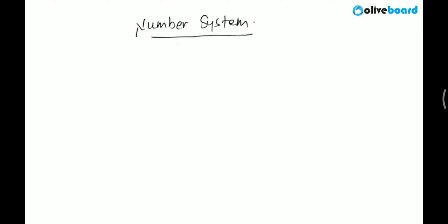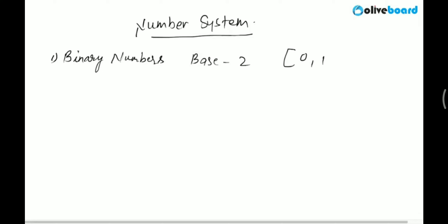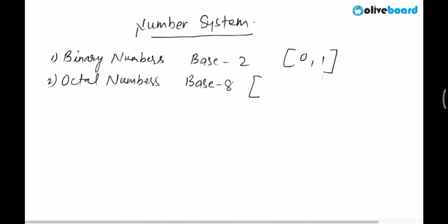In computer science, we basically have four types of number systems. The first one is called binary numbers. Binary numbers have base two, which means we have two symbols: zero and one. The second type is octal numbers. Octal numbers have base eight, meaning we have eight symbols that go from zero to seven: zero, one, two, three, four, five, six, and seven.